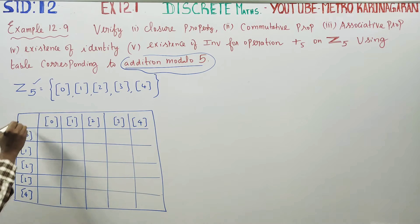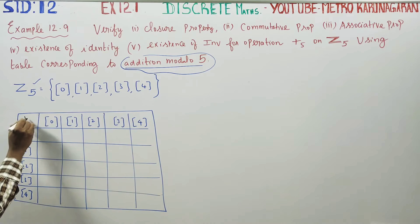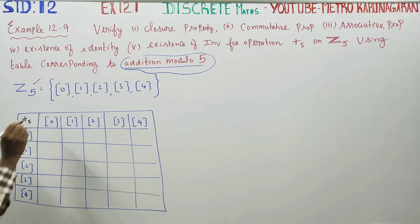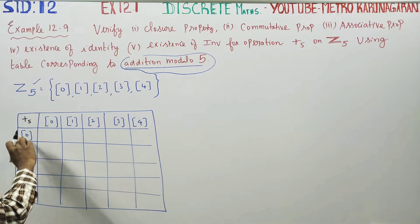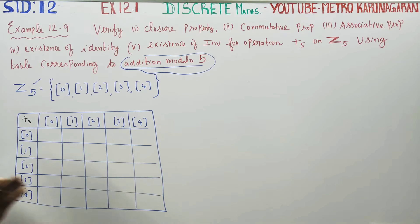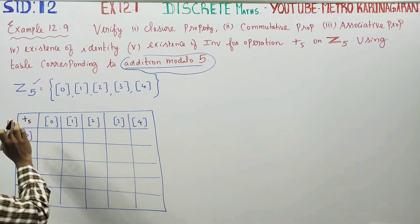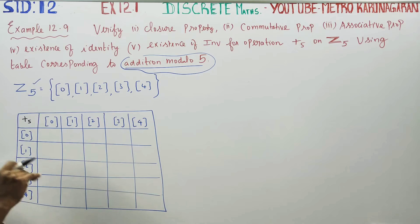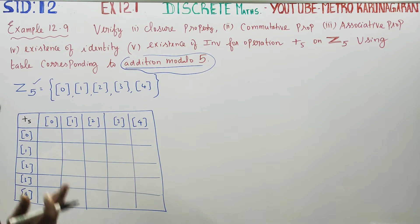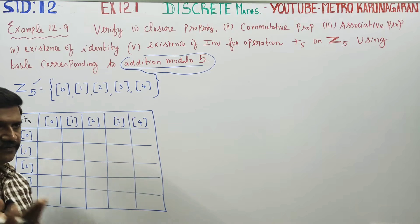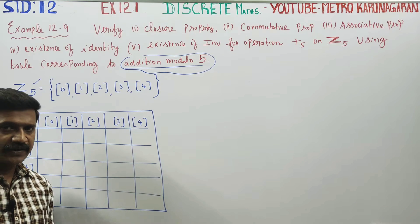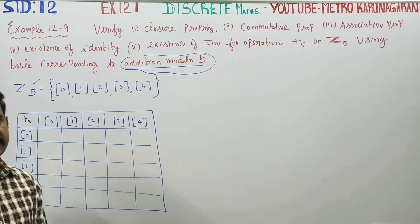What is the meaning of addition modulo 5? When you add numbers, you divide the result by 5 and use the remainder as the answer in the table.